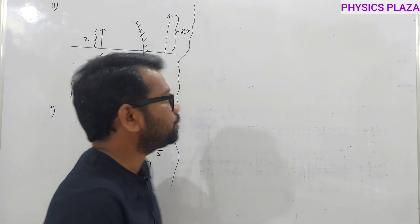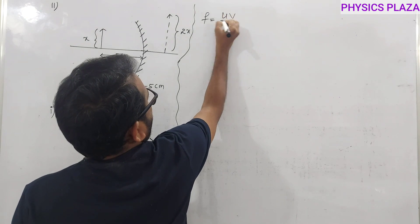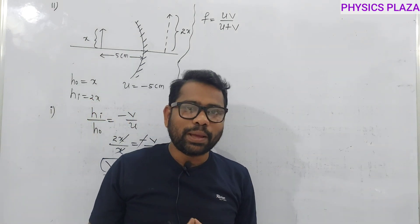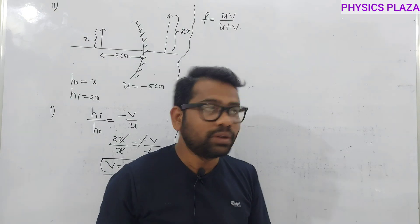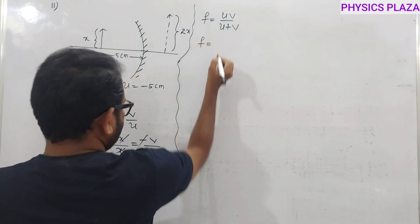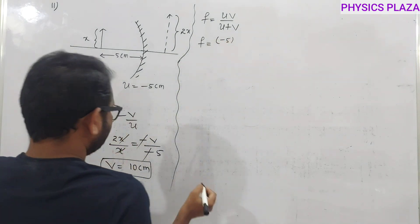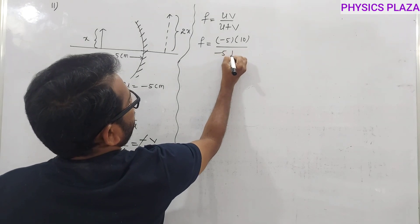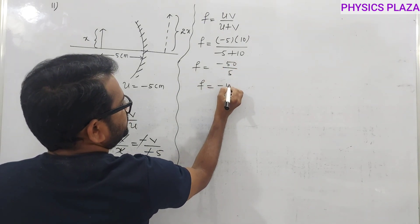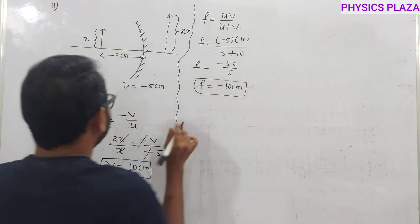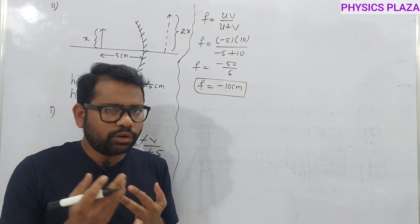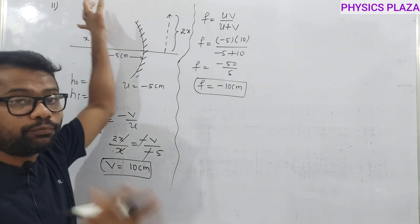Now calculate focal length using the shortcut formula: f = uv/(u + v). Here u = −5 cm and v = +10 cm. So f = (−5 × 10)/(−5 + 10) = −50/5 = −10 centimeters. This is how we calculate image distance and focal length. This shortcut avoids taking LCM — directly substitute and get the answer.